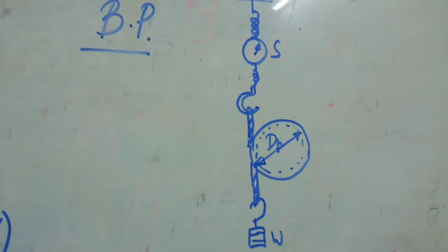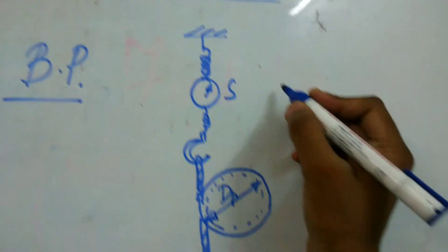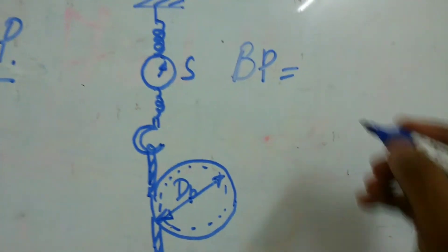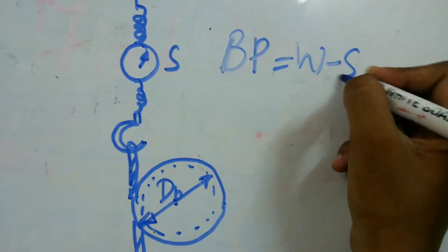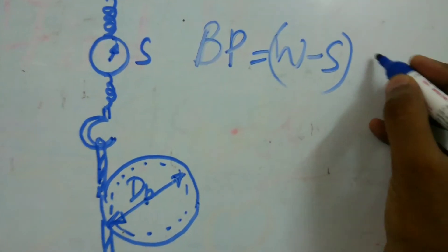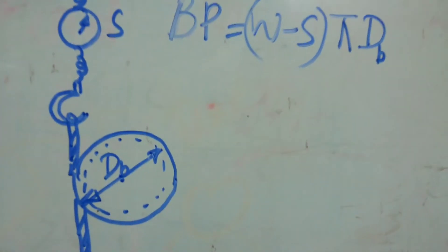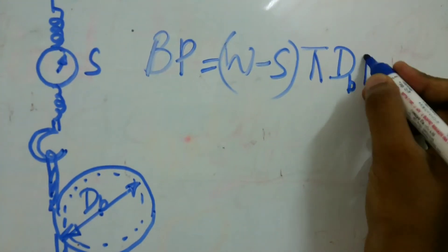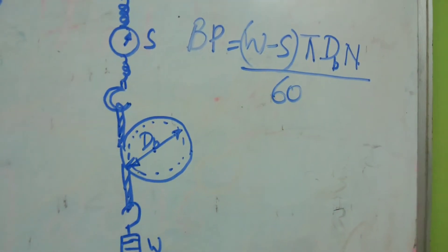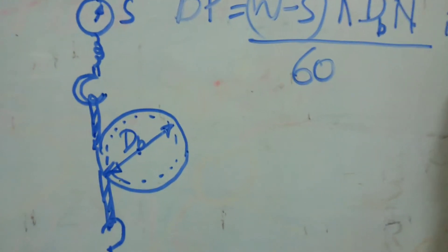The formula for brake power BP using a rope brake dynamometer is: BP = (W − S) × π × DB × N divided by 60, and the unit is watts.